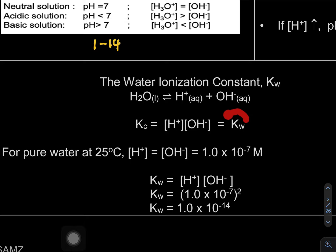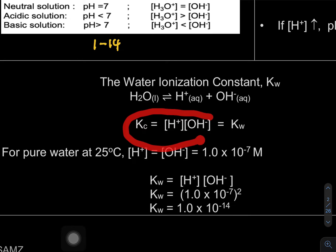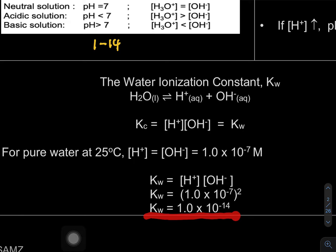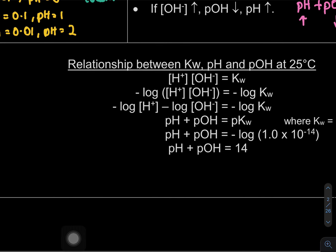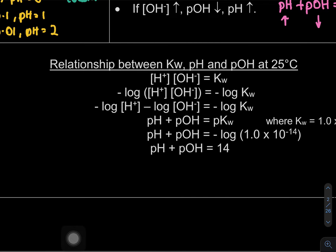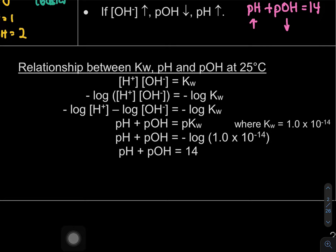At 25°C, the concentration of both H⁺ and OH⁻ is 1×10⁻⁷. When we insert these values into the equation, Kw = 1×10⁻⁷ × 1×10⁻⁷ = 1×10⁻¹⁴. So that is your water ionization constant.